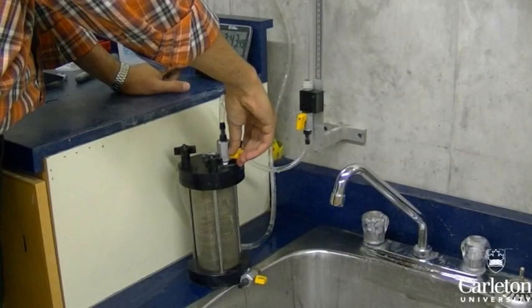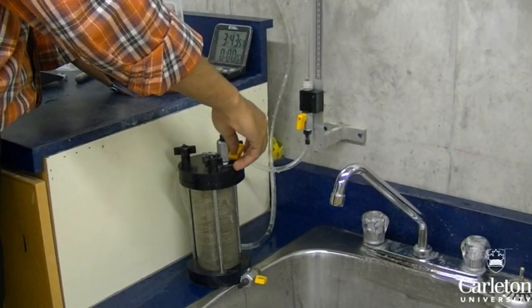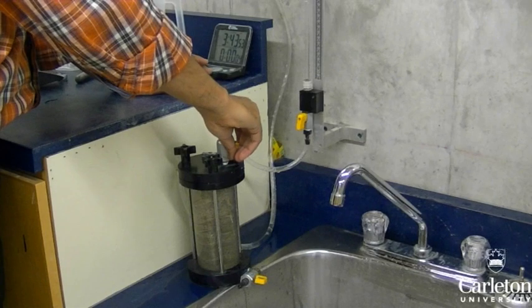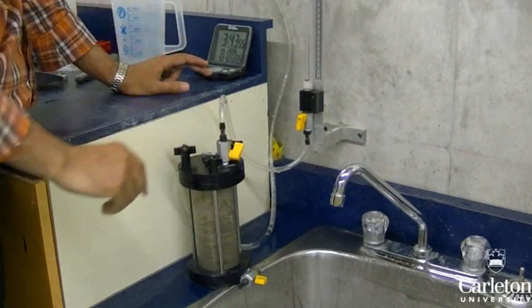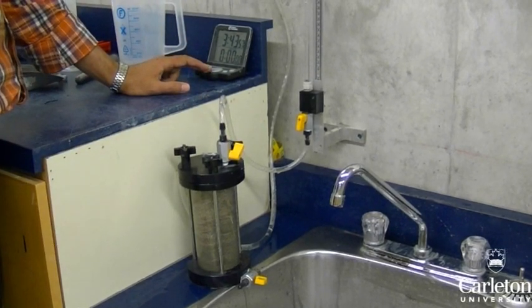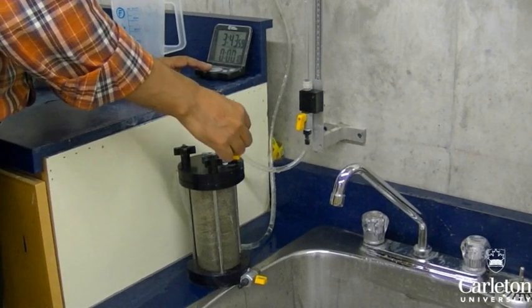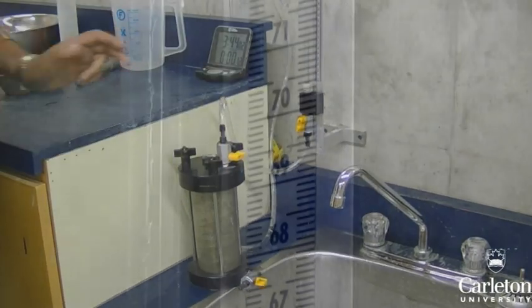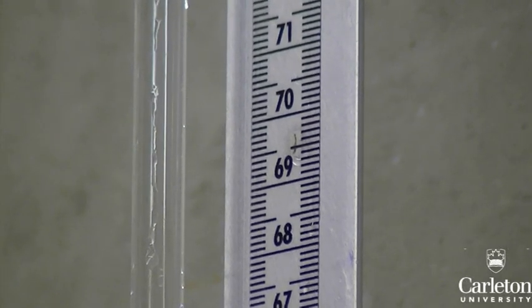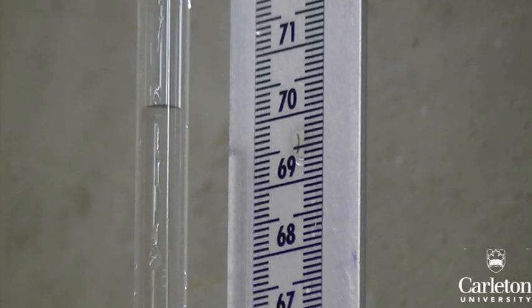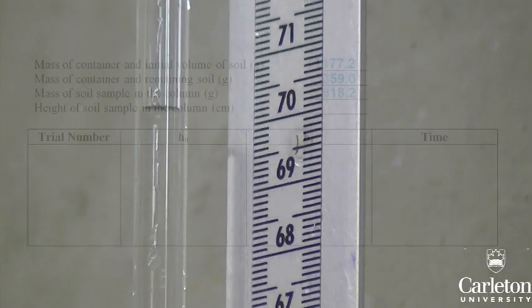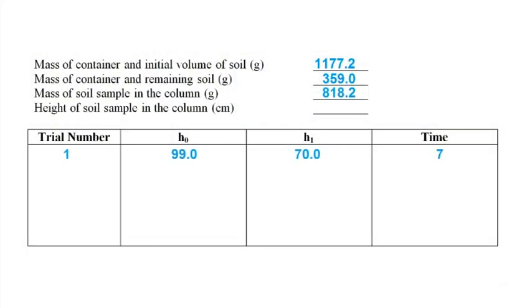For the first test, use a stopwatch to record the time it takes for the water to drop a certain distance. Start the stopwatch and open the valve simultaneously. Wait for the water level in the pipe to drop a given distance. Close the valve and stop the stopwatch simultaneously when the new level is reached. Record both levels of water as well as the time in seconds it took for the water level to drop.